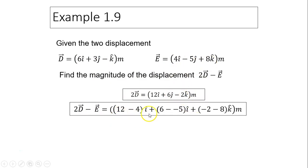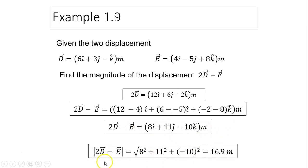So 12 minus 4, that's the i component. Next one, 6 minus negative 5. Next one is negative 2 minus 8. So your answer is 8i plus 11j minus 10k meters. So that is the resultant vector. What is the magnitude? The magnitude, you use Pythagorean theorem. Add everything together, you should have 16.9 meters.